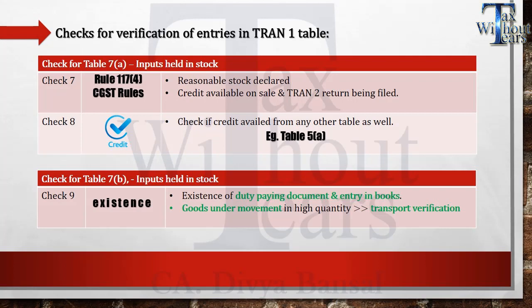In Table 7B, what will be checked is whether you have the duty-paying document, the date of your book entry, and — if it is of a huge value — the goods movement. If you cannot recollect what all details were given in Tran 1, you can refer to a separate video on Tran 1 to recollect what each field covers and then relate it to what will be verified in each table.